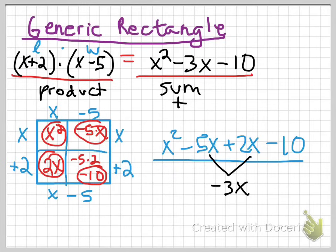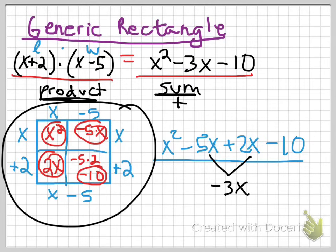And that is how the generic rectangle works. We're turning a product into a sum by doing length times width and using this fun little rectangle strategy. And it's really smooth. It works for any kind of product. So it's really nice.